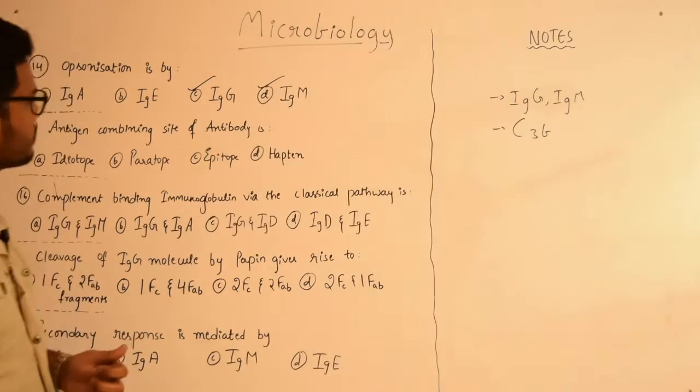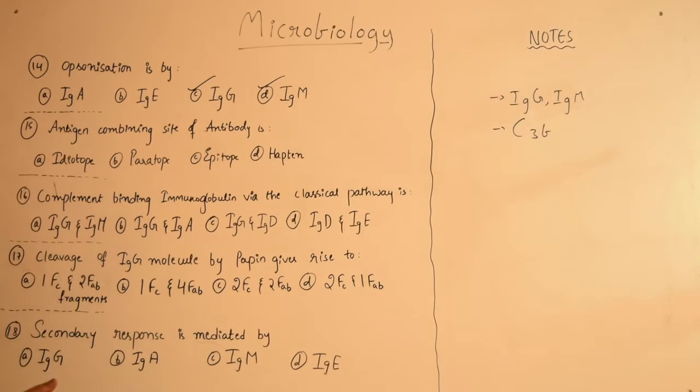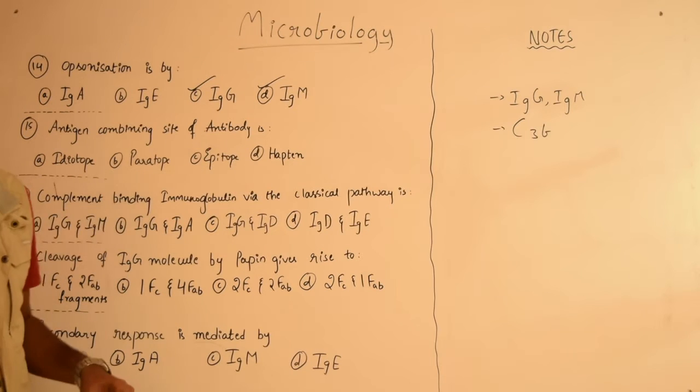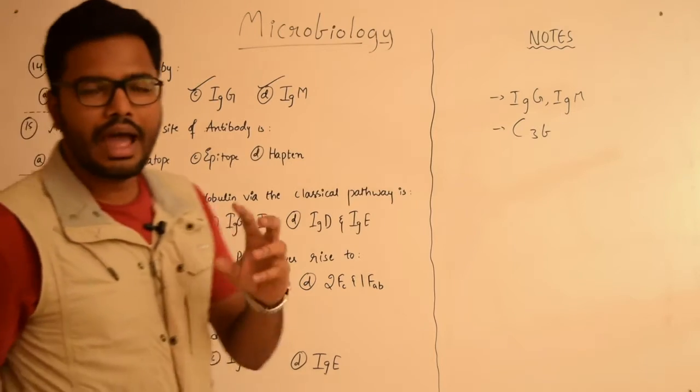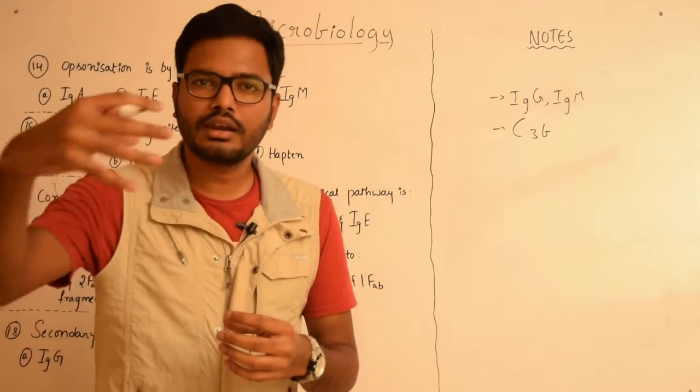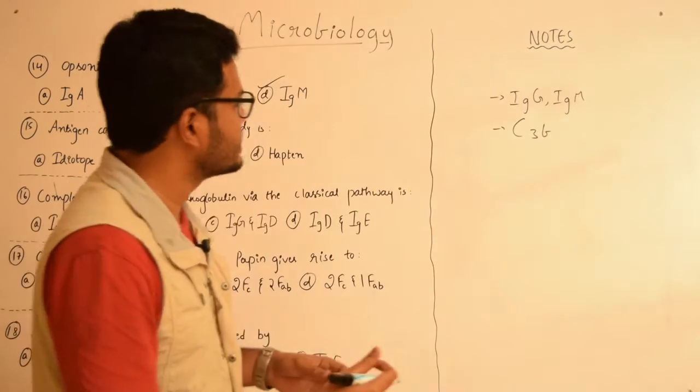Now moving on to the next question: antigen combining site of antibody is Idiotope, Paratope, Epitope, or Hapten. Now let's see these terms. That part of antibody where the antigen comes and binds is considered to be...